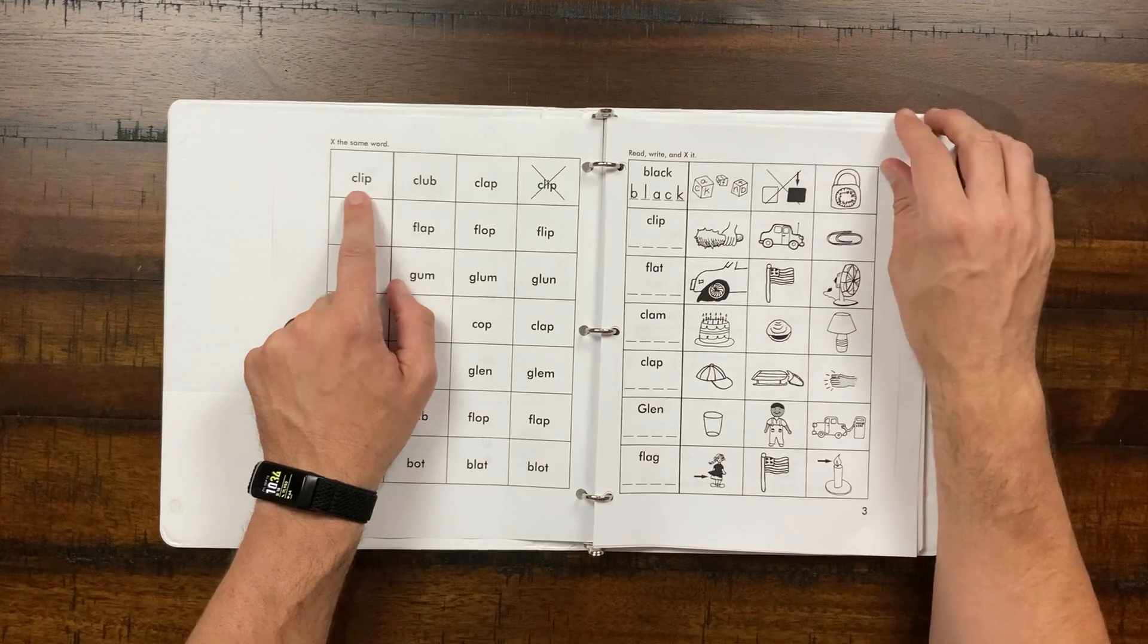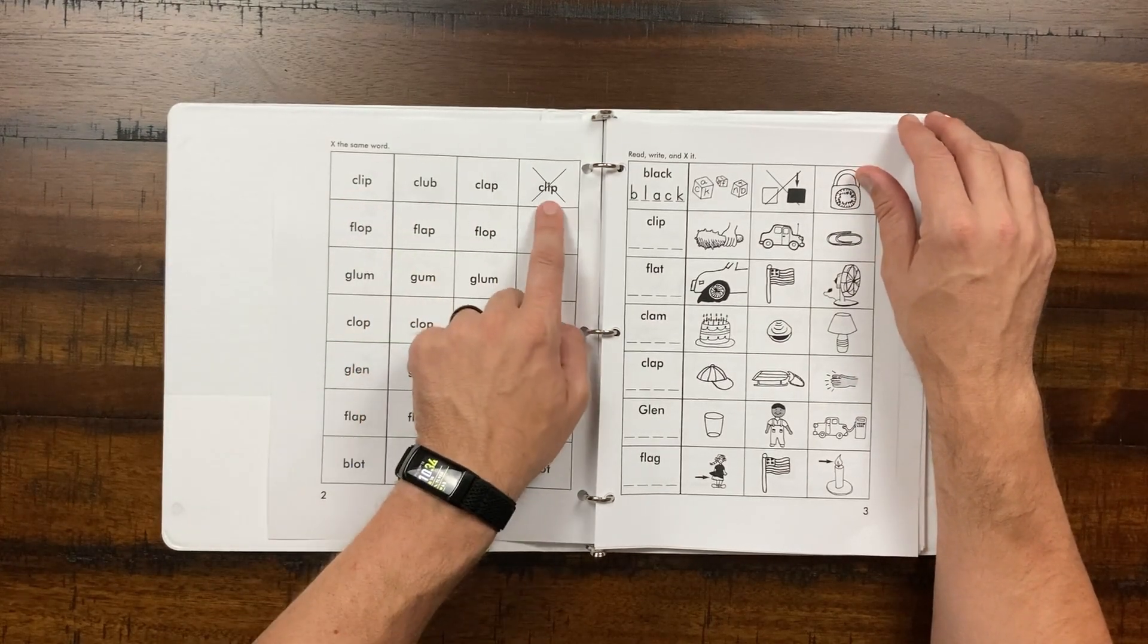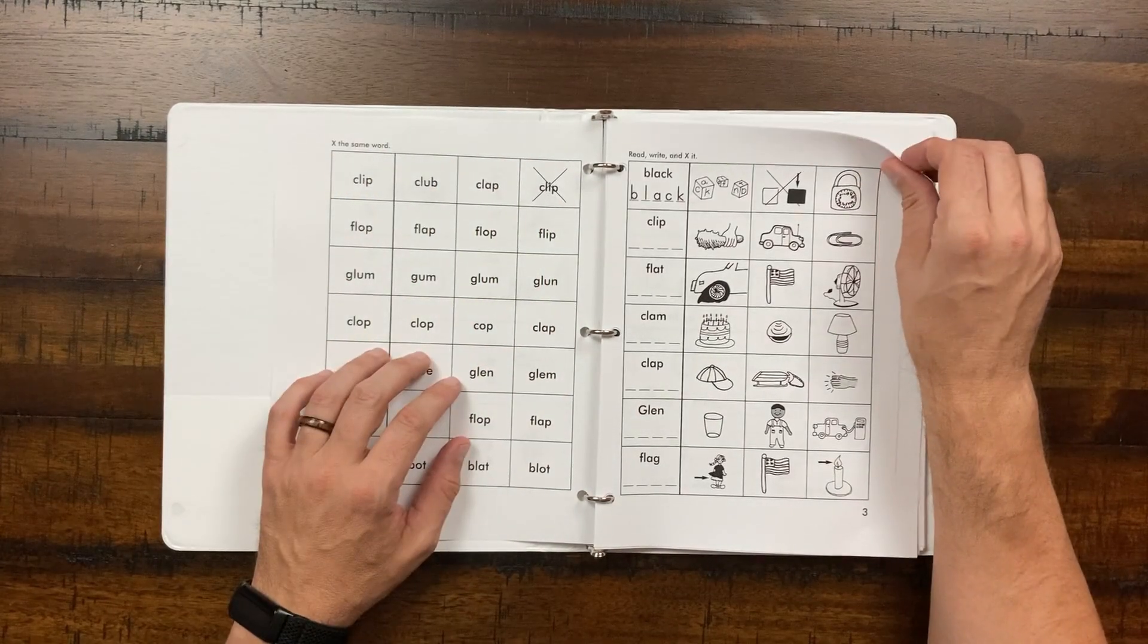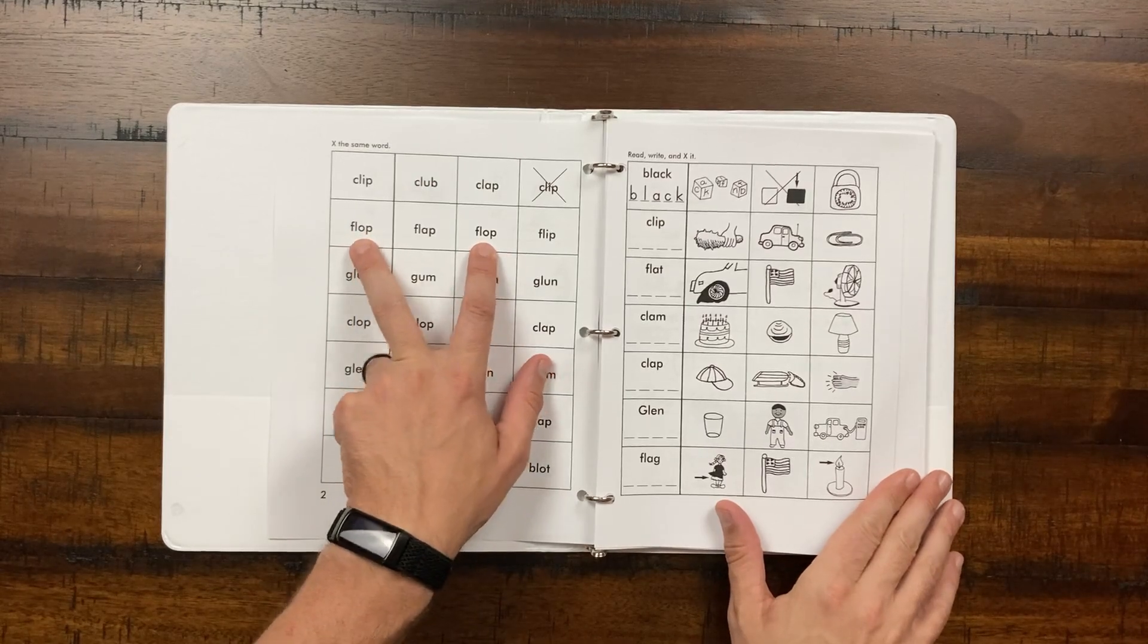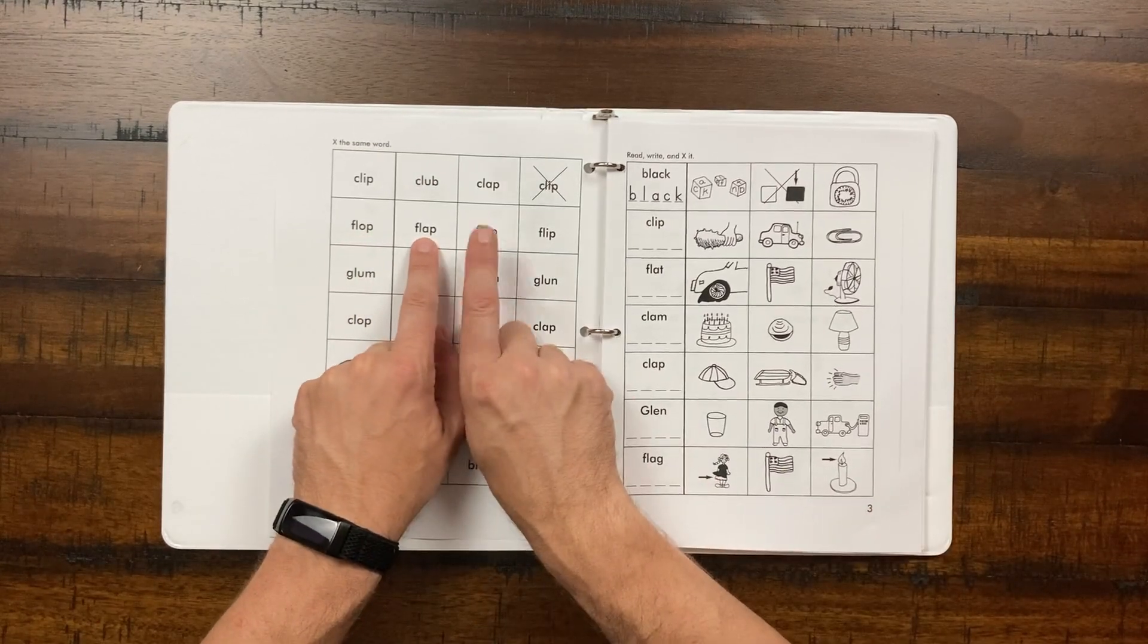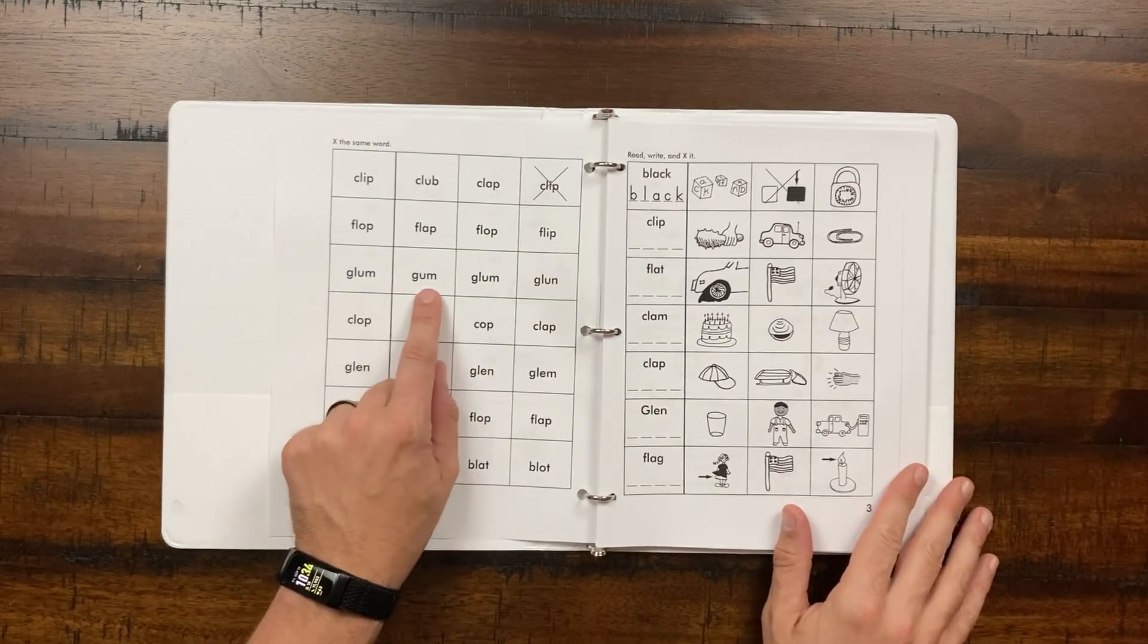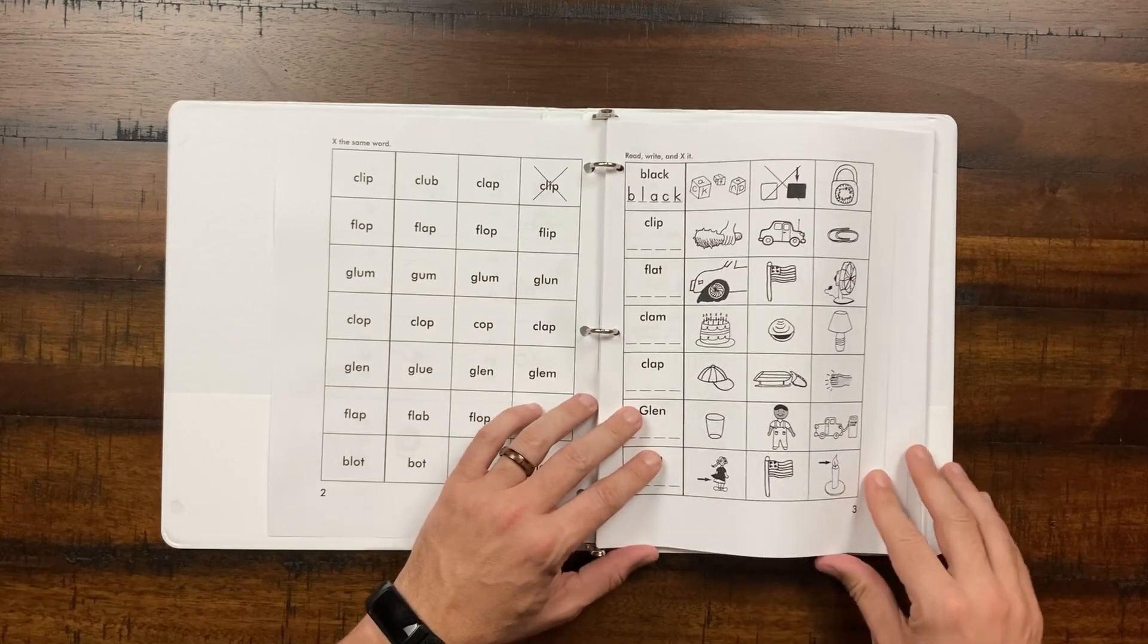So here we're asking the learner to look at this word. I like to have them read this word, and then read all the words until they match the word, and then go ahead and put the X or circle it. Here we have flop, and so they have to look for the other flops, so they have to be able to distinguish between an A and an O visually. Here we have glum, and they got to make sure, don't forget that L, because gum and glum are one letter off.